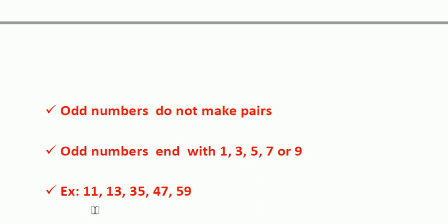Examples: eleven ends with 1, and 1 is an odd number, so eleven is an odd number. Thirteen ends with 3, so thirteen is an odd number. Thirty-five ends with 5, and 5 is an odd number, so thirty-five is an odd number.